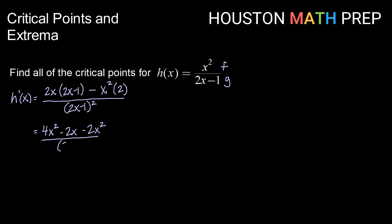still over 2x minus 1 squared. Now combining my like terms in my numerator, I'll have 2x squared minus 2x over 2x minus 1 squared.